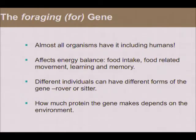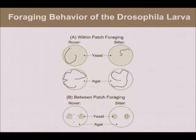Different individual fruit flies can have different forms of the foraging gene. Some are rovers and some are sitters, and interestingly, how much protein this gene makes depends on the environment. If you put fruit fly larvae in a yeast-covered petri dish, some move a lot while they eat and some move less. You can find these two types from fruit in an orchard — there are two overlapping distributions, not one continuous normal distribution. Two approaches to life as a fruit fly maggot. And it isn't that sitters are slow — if you put them in the absence of food, both types move equally well.